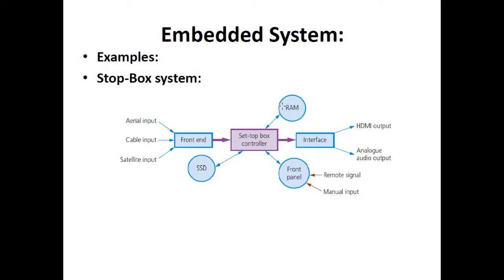Examples of embedded systems: embedded systems have four simple components — some form of input, memory, and some form of output. A set-top box or satellite cable device can have three types of input: cable input, aerial input, or satellite input. It has a set-top box controller with an SSD (solid state drive) and RAM as memory, a front panel that detects remote signal or manual input, and an interface with HDMI output or analog audio output.